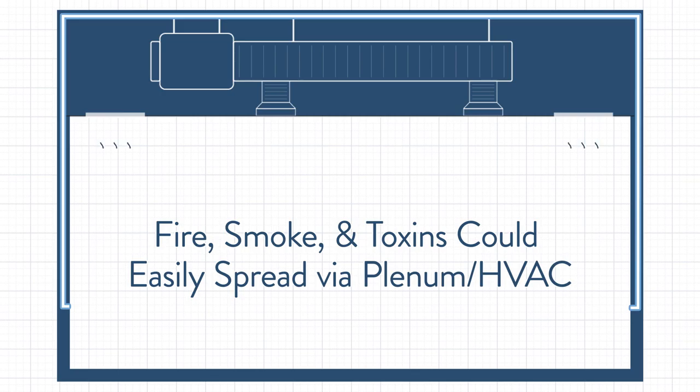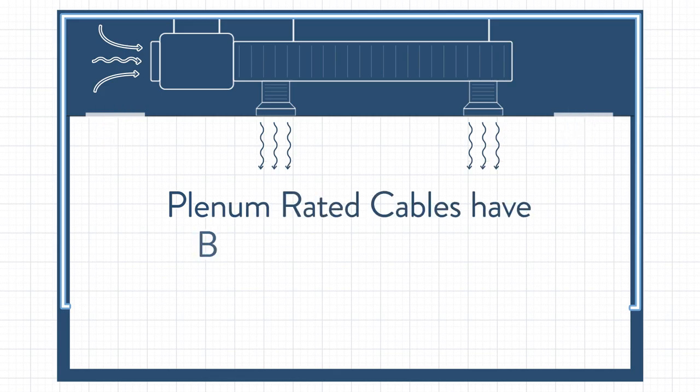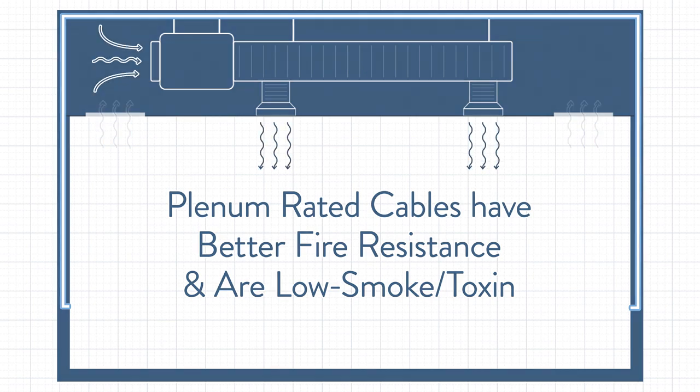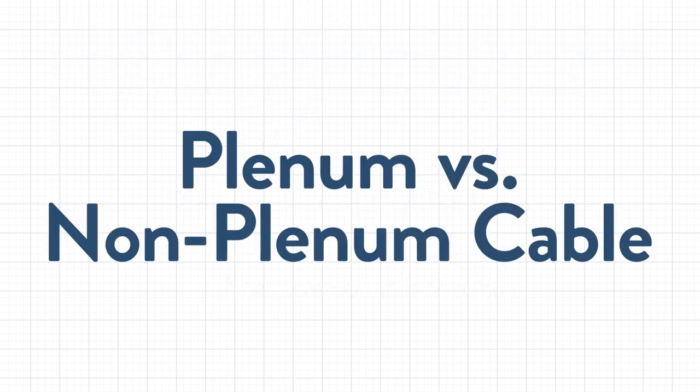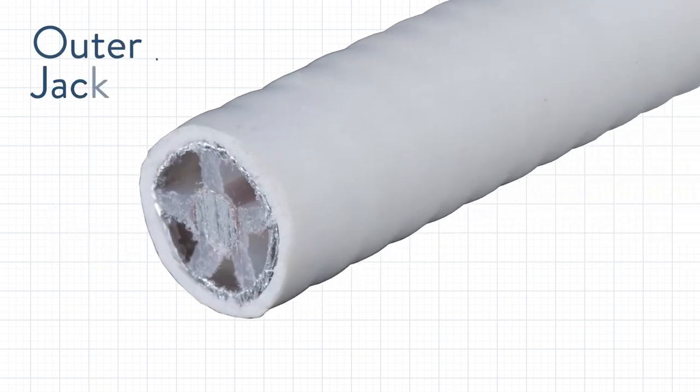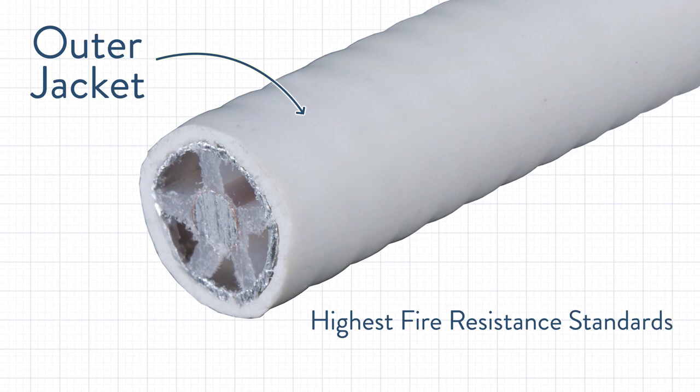For these reasons, plenum spaces require cables that are plenum rated, which means they meet higher standards like being more resistant to fire and producing less smoke and toxins in the event of a fire. Technically, any cable could be made into a plenum rated cable. The key difference is that plenum cables have a superior outer jacket or insulation. This outer jacket holds up to the highest fire resistance standards while also producing the least amount of smoke or toxins in the event of a fire.